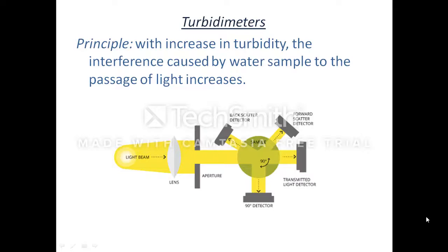Now coming on to the turbidimeters. First, the principle on which turbidimeters work: all turbidimeters work on the same principle — that with increase in turbidity of water, the interference caused by the water sample to the passage of light rays also increases. In other words, light rays pass easily through less turbid water.